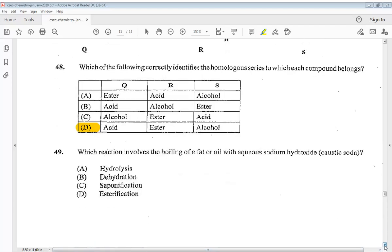Question 49 says which reaction involves the boiling of a fat or oil with aqueous sodium hydroxide caustic soda. A hydrolysis, B dehydration, C saponification, or D esterification. So the answer is C saponification.